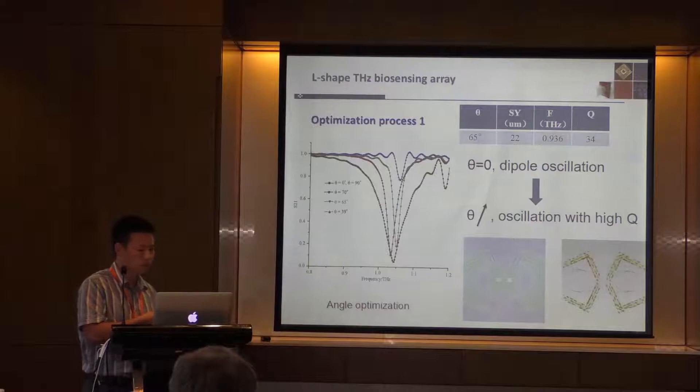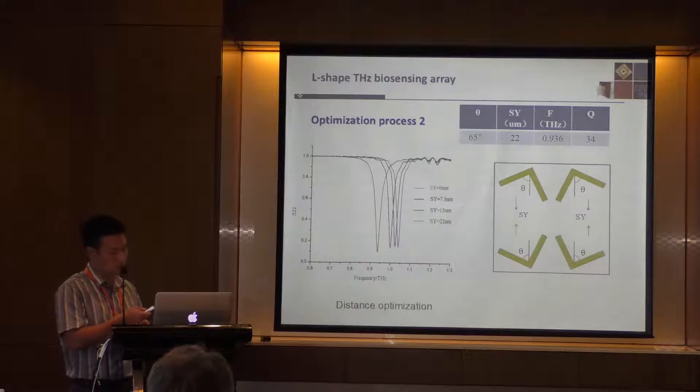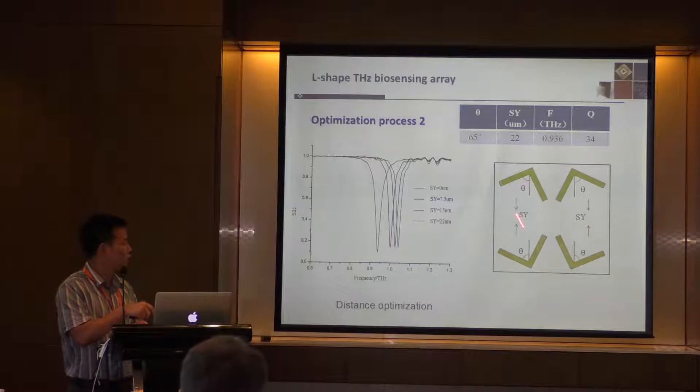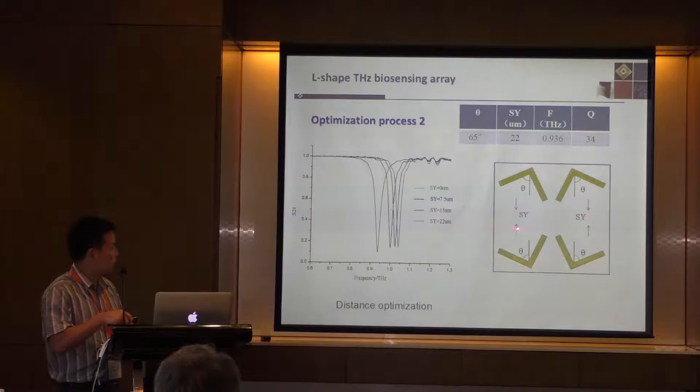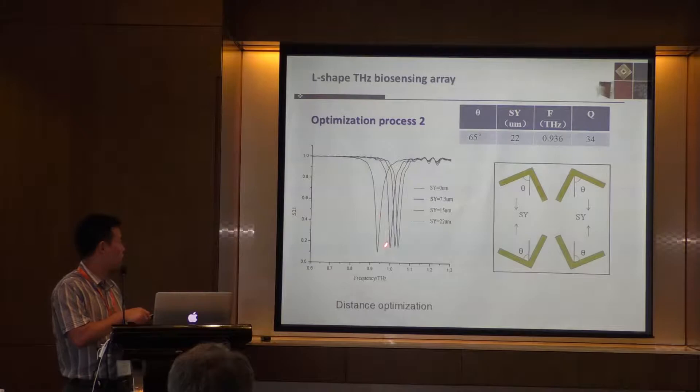The second optimization is changing the distance between the top and bottom parts. When these two parts are close, we can get different oscillations. So after the optimization, we choose 22 micrometers. We get this — this is the best one.